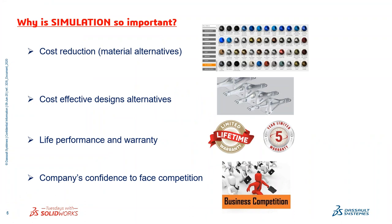Why is simulation so important? As a designer, the best option simulation gives us is cost reduction. SOLIDWORKS has a very vast library of materials with all their physical properties, and you can add materials with their physical properties into the library. You can have alternate materials with the same stiffness, and cost-effective design alternatives — for example, running a topology study to convert a lump of material into a frame structure. You can also define the life, performance, and warranty of your product, and give your company the confidence to face competition.